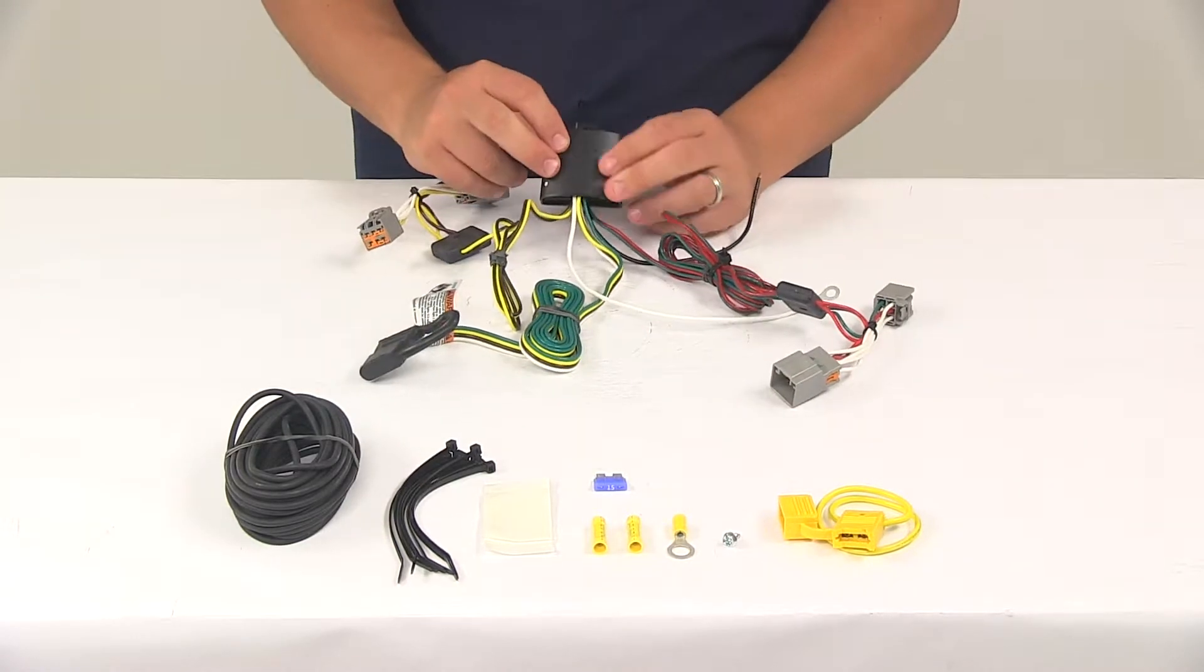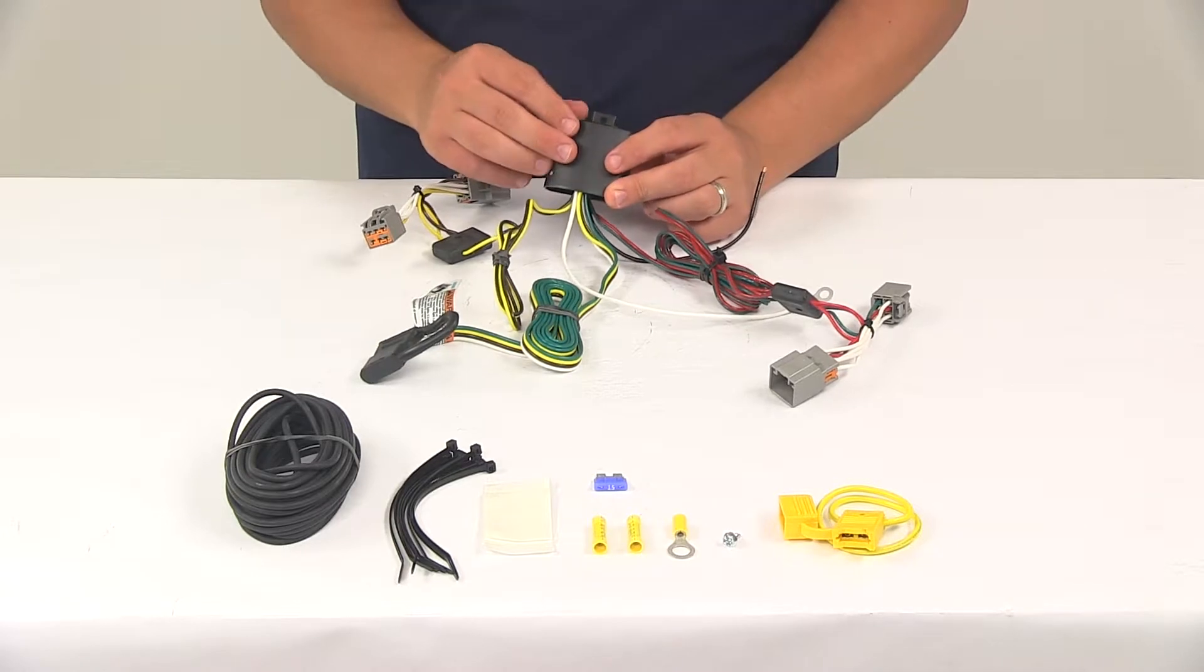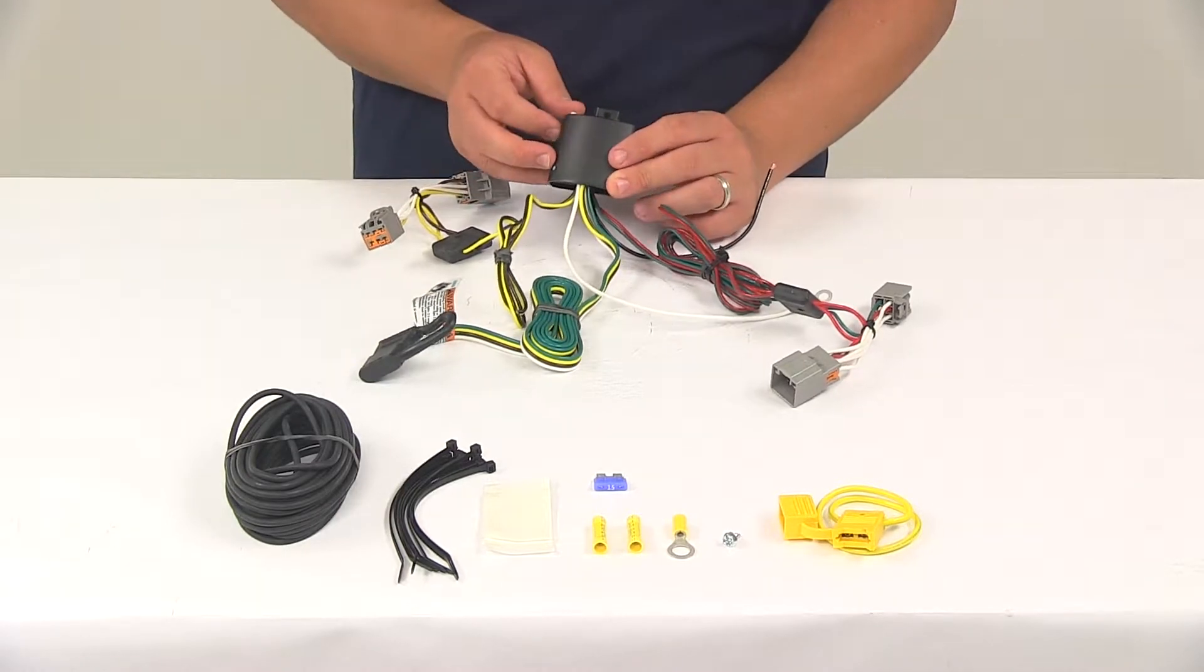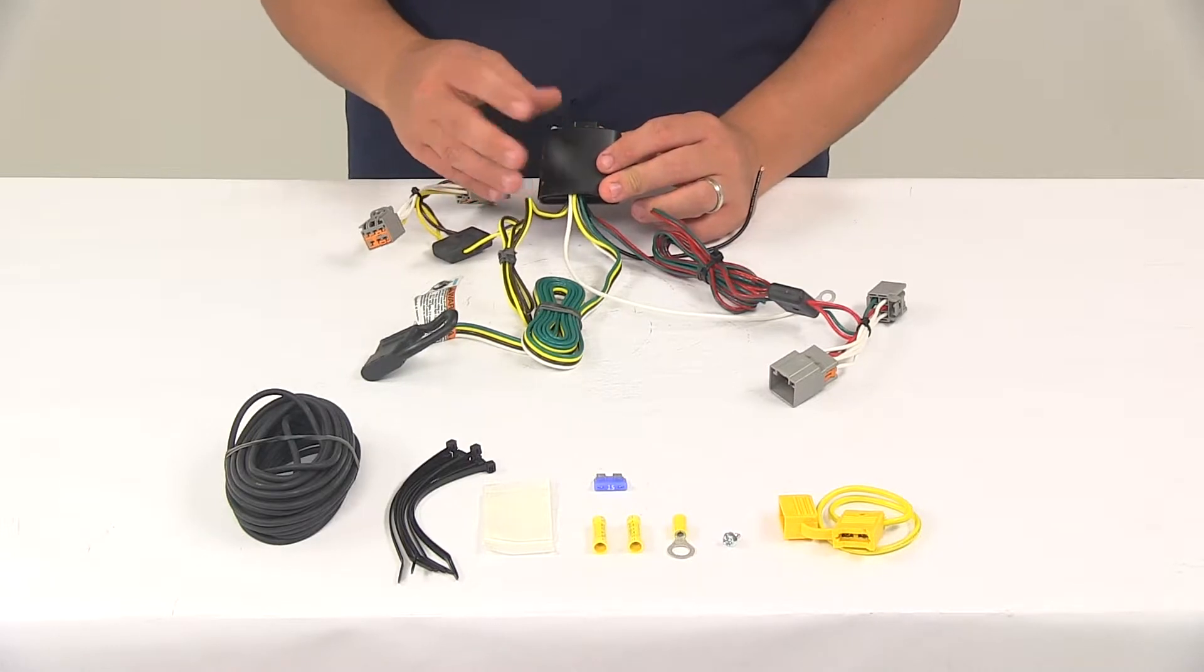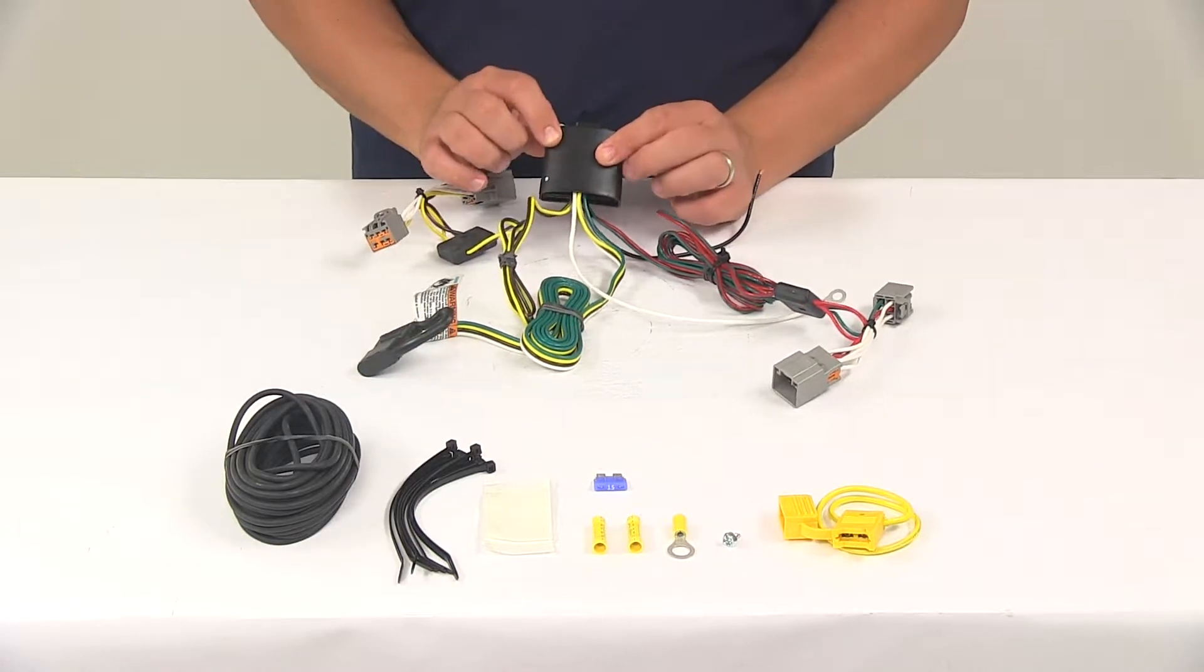The black box, this is your tail light converter. This is the included module light. It's going to ensure that your vehicle's wiring matches that of your trailers. The powered module is going to connect directly to the vehicle battery through the wiring to avoid overloading the vehicle's electrical system.